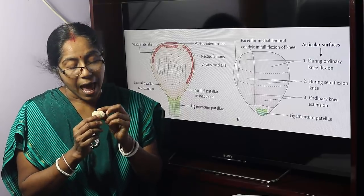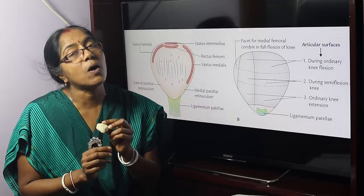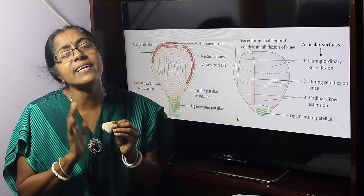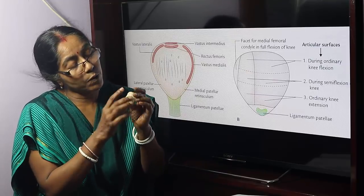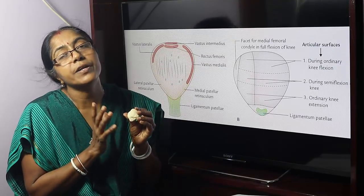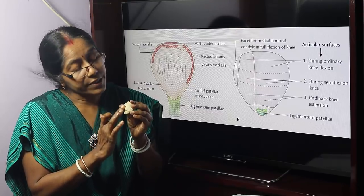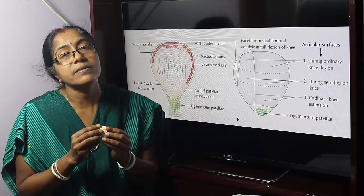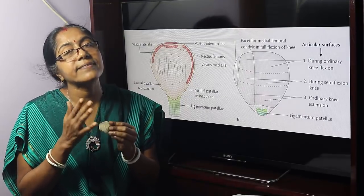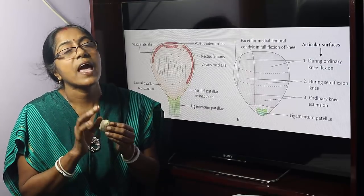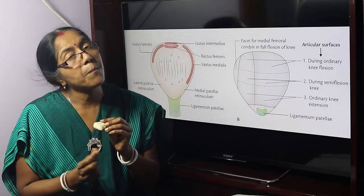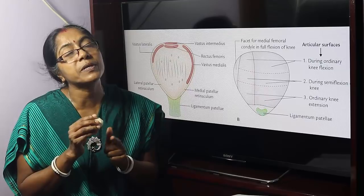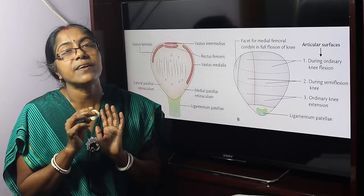What are the anatomical points? The apex is directed downwards and the base is directed upwards. The anterior surface is rough and convex. The posterior surface is articular, and the larger articular portion is directed laterally. The presenting parts are: apex, base, anterior surface, and posterior surface. The pointed apex is directed downwards.